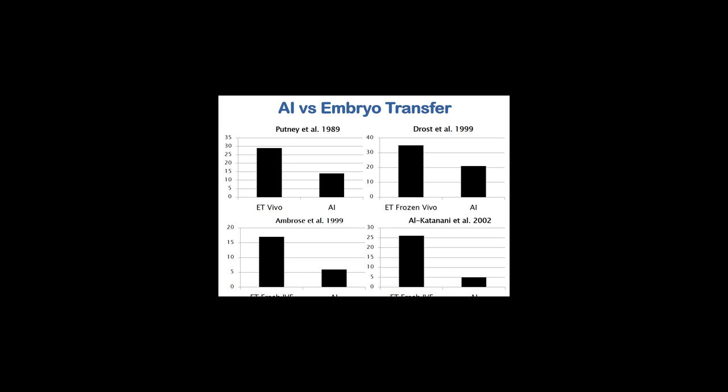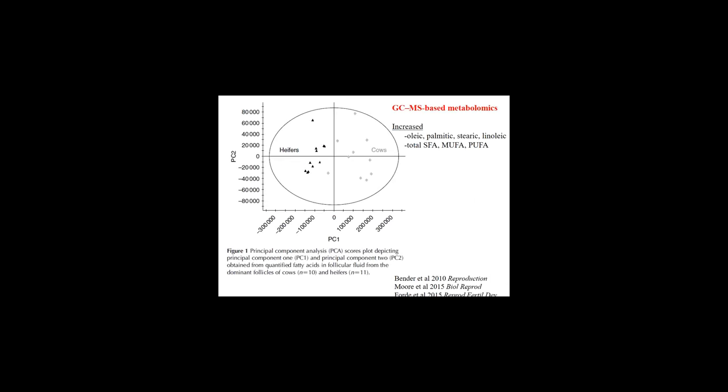Data from cows under heat stress illustrate the same point: fertility was higher following embryo transfer, where you bypassed the cow's own oocyte, than it was following artificial insemination — again indicating a role for the oocyte in infertility. Metabolomic analysis of follicular fluid recovered from heifers and postpartum dairy cows indicates that both groups separate from each other. Among the main differences in follicular fluid are differences in fatty acids, which we know are detrimental to oocyte quality. So the environment in which the oocyte develops is very different in a heifer compared to a postpartum dairy cow.